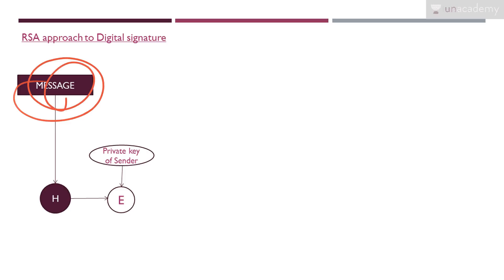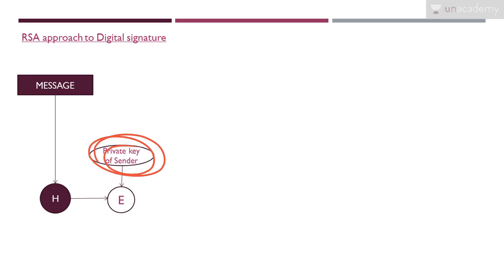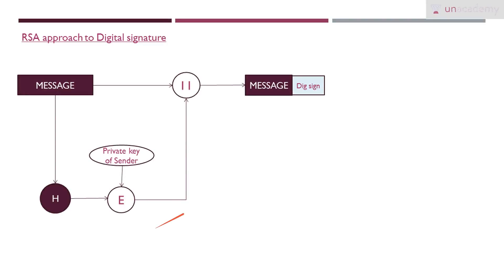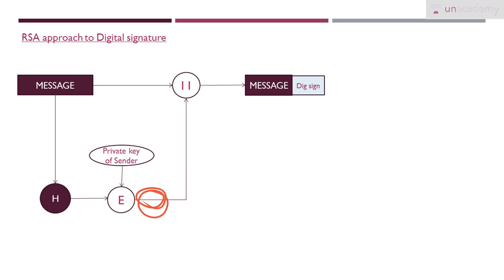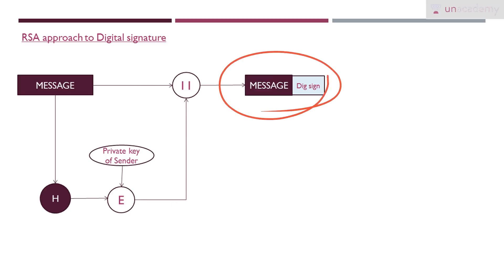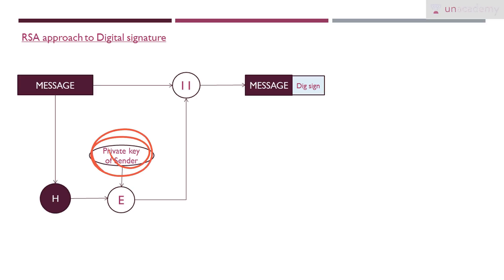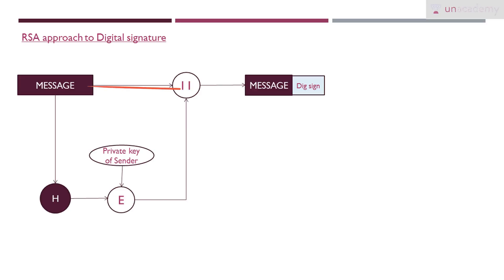In the RSA approach to digital signature, first we take the message and apply it to a hash function. The result is a hash code. That hash code is then encrypted using the sender's private key, giving us an encrypted hash code. This encrypted hash code is appended to the message and sent to the receiver — message plus digital signature. The private key provides unique information about the sender.